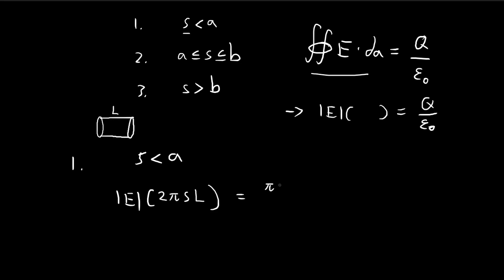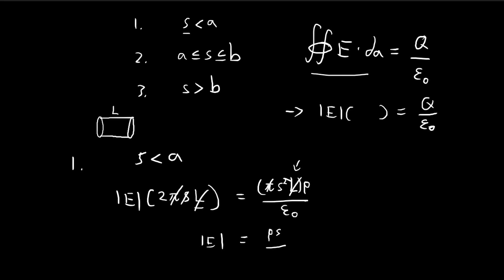That equals the charge enclosed: πs²l times the charge density, divided by epsilon. The l's cancel, and then the π and one factor of s cancel, leaving the absolute value of the electric field equal to ρs over 2ε. So the electric field points in the radial direction with magnitude ρs/2ε.